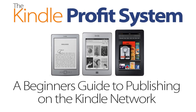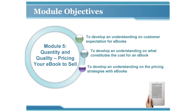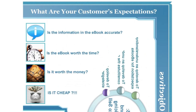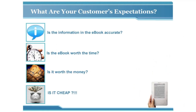Welcome to the Kindle Publishing System, learning module five: Quantity and quality — pricing your ebook to sell. Your module objectives are to develop an understanding of customer expectations for ebooks, understand what constitutes the cost for an ebook, and develop an understanding of pricing strategies with ebooks.